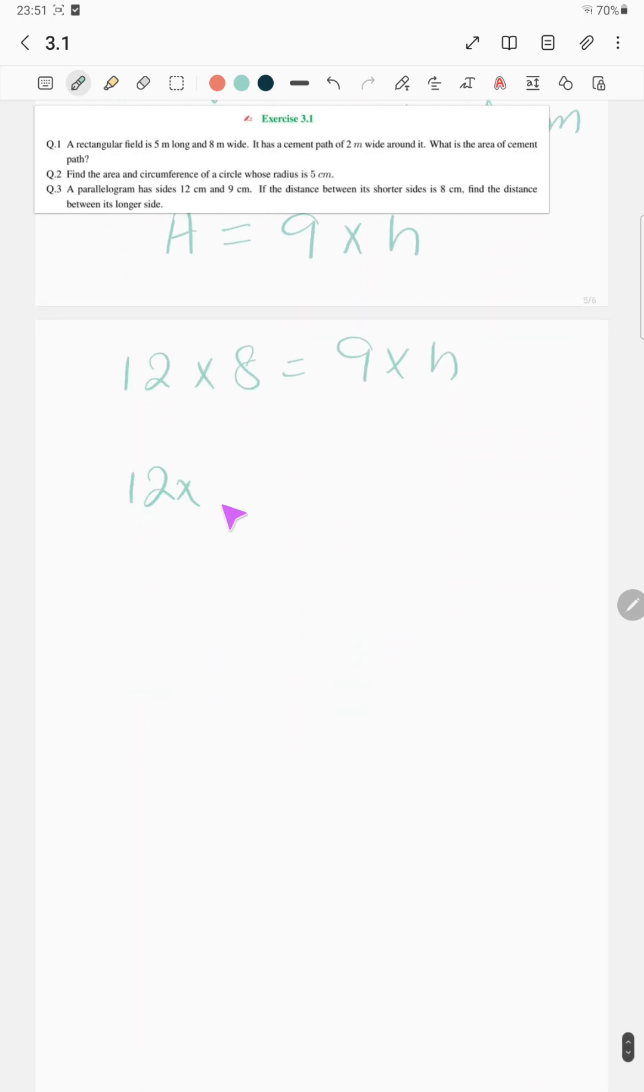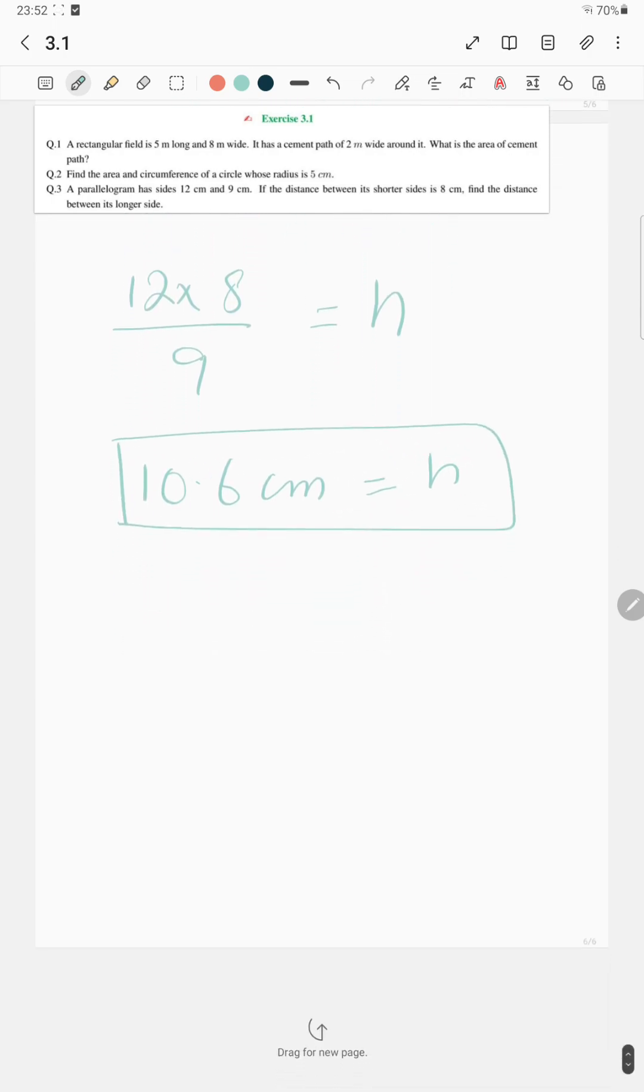12 into 8 over 9 equals h. So height, or the distance between the longer sides, is 10.6 centimeter.